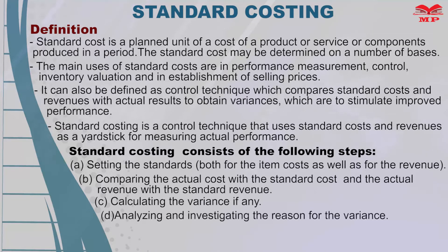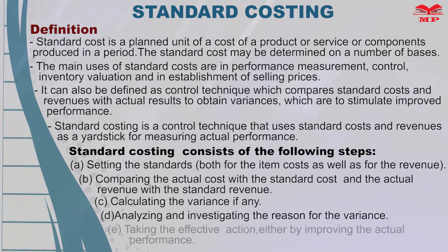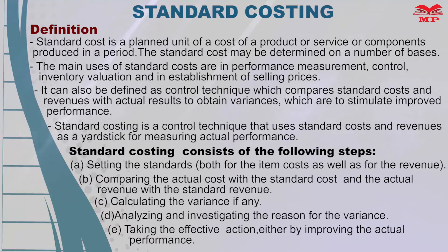Step four: analyzing and investigating the reason for the variance — to make the exercise cost-effective, only significant variances should be investigated. Step five: taking effective action, either by improving the actual performance if it is not up to the mark, or by revising the standards if they were set at a level that is unachievable for any reason.